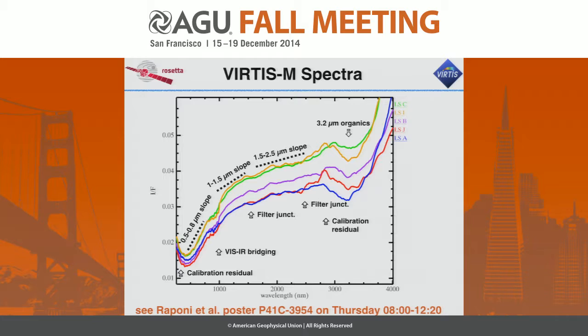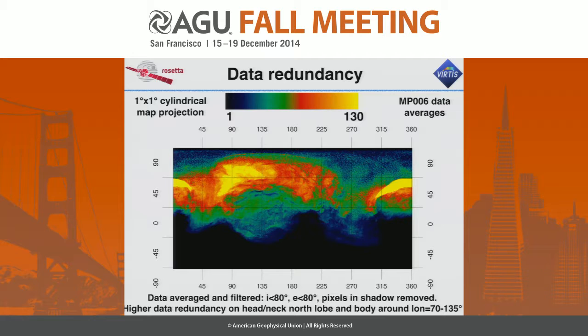We have to take care of some residual calibration issues. In particular, below 0.4 micron we have an increase which could be real or not — we are working on this with OSIRIS in order to better inter-calibrate the two instruments. We are characterized by low signal-to-noise ratio in the visible channel at around 1 micron, so that feature could be real or not. We are processing new observations taken with a longer integration time, and then we have the usual filter junction in the infrared range.